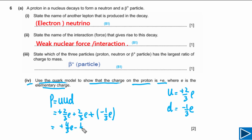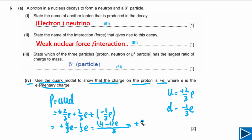So we have plus 4/3 E minus 1/3 E. Taking the common denominator, this gives (4 − 1)/3 times E, which simplifies to 3/3 E, meaning the charge on a single proton equals plus E. This confirms the charge on the proton is plus E.